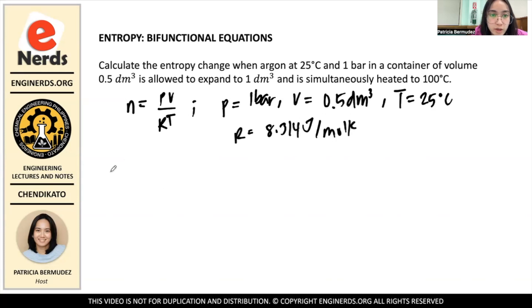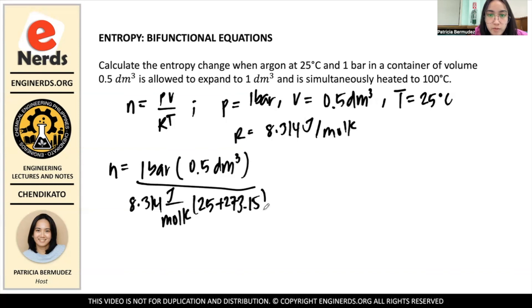So we substitute that. We have N equals 1 bar times 0.5 dm³ over 8.314 J per mole Kelvin. And then your temperature, we convert that into Kelvin because Kelvin is also - it's 25 plus 273.15 Kelvin.